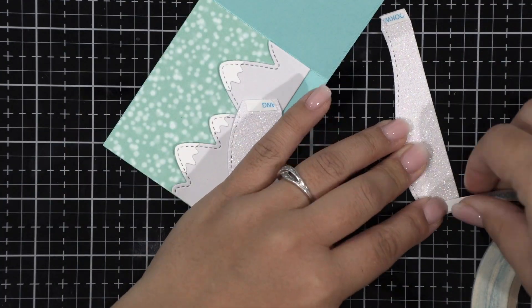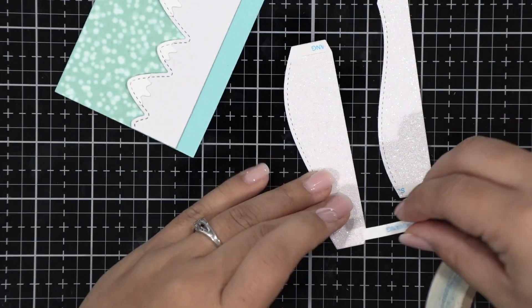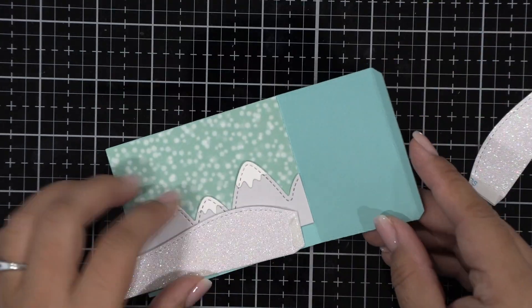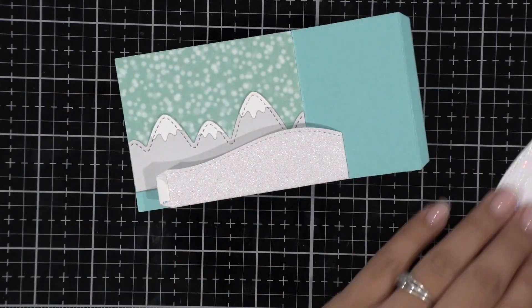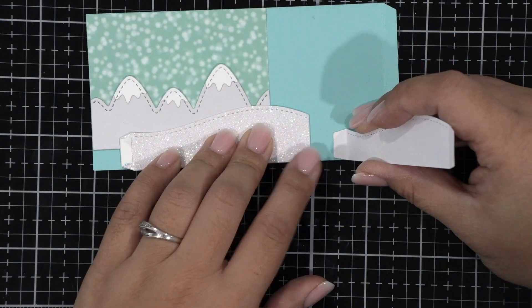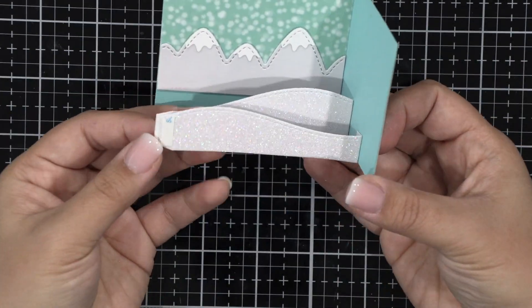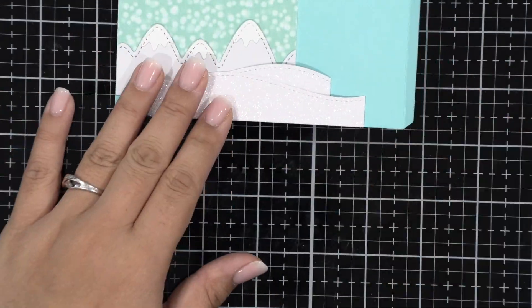Next, I've die cut those snowy hills using pixie dust cardstock. That's Lawn Fawn's white sparkle cardstock, and then I've added double-sided adhesive to the flaps so that they can be adhered to the side walls of the shadow box card. It's easiest to do it one side at a time and that's why I'm not adhering the left side to the other side of the box yet.